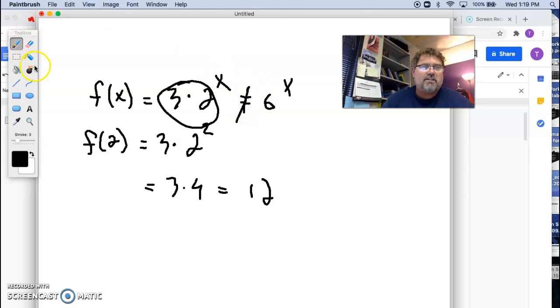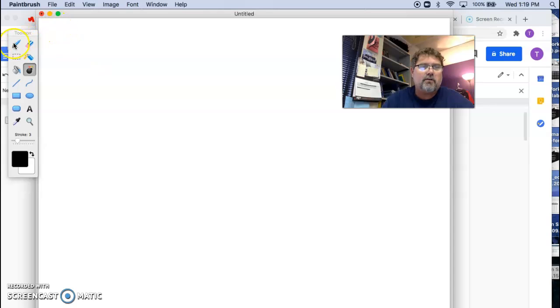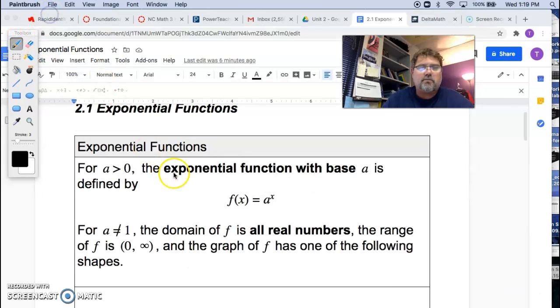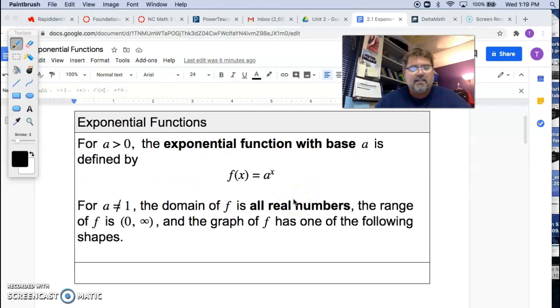In this definition, they left off that additional number that could be as a multiplier. And it says for a non-equal to 1, well, if it's raised 1 to any power is itself, so you wouldn't have an exponential growth. The domain of an exponential function is always all real numbers.